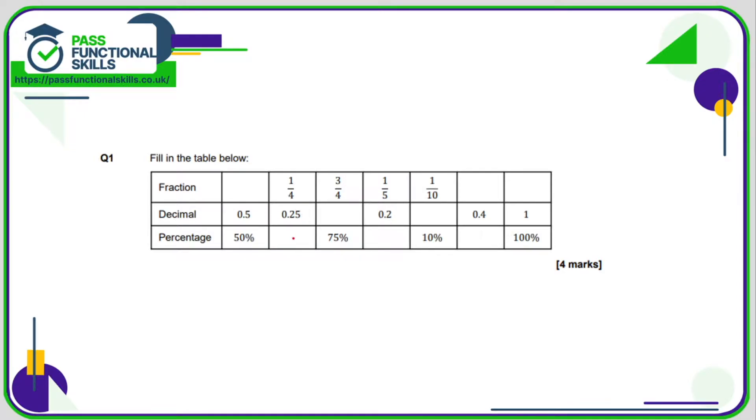So that is 25%. 0.2 multiplied by 100 is 20%, and 0.4 multiplied by 100 is 40%. Let's look at the percentages into decimals. 75% as a decimal, divide that by 100, that is 0.75.